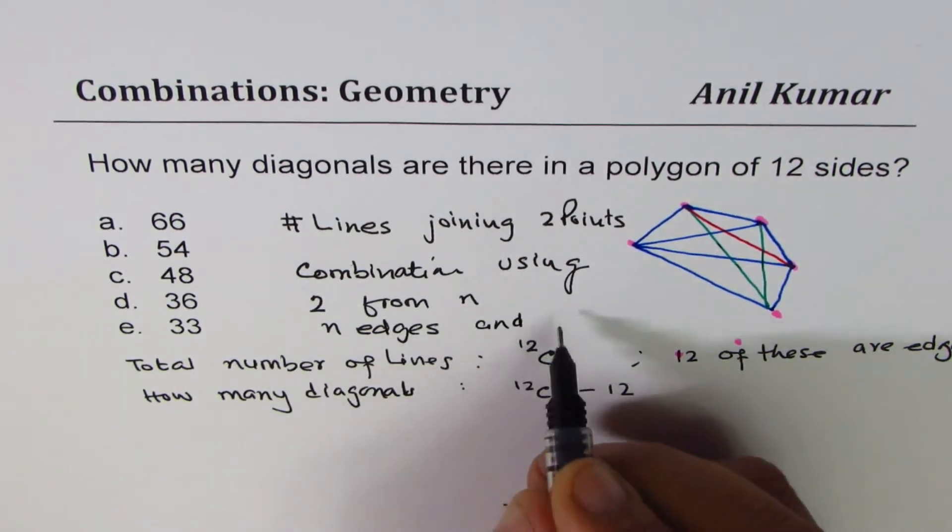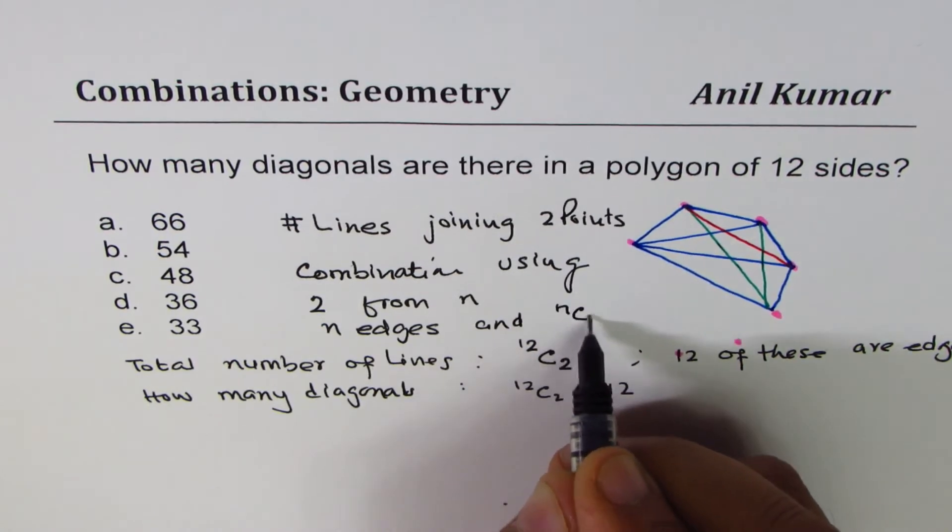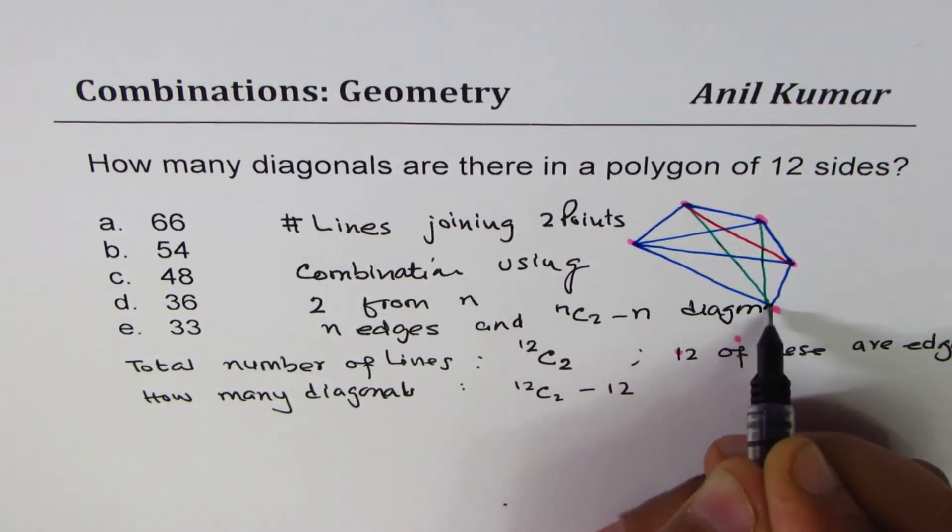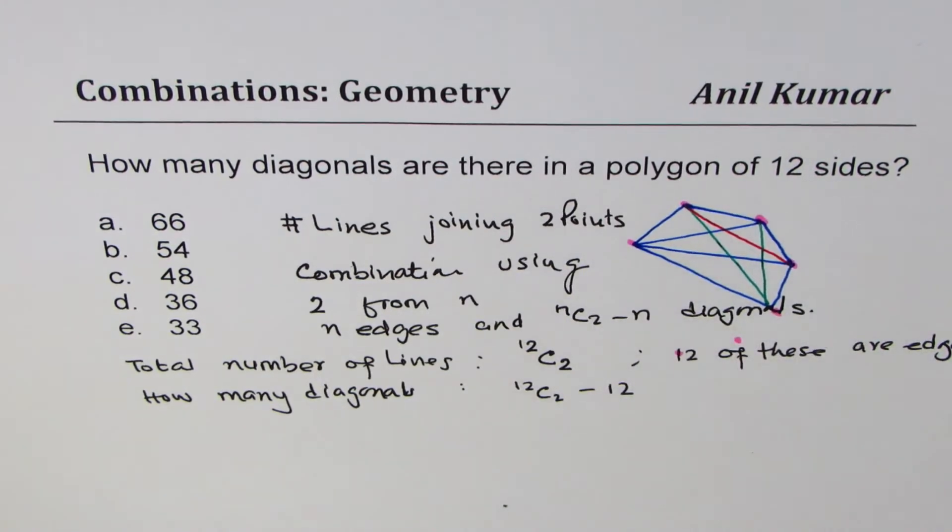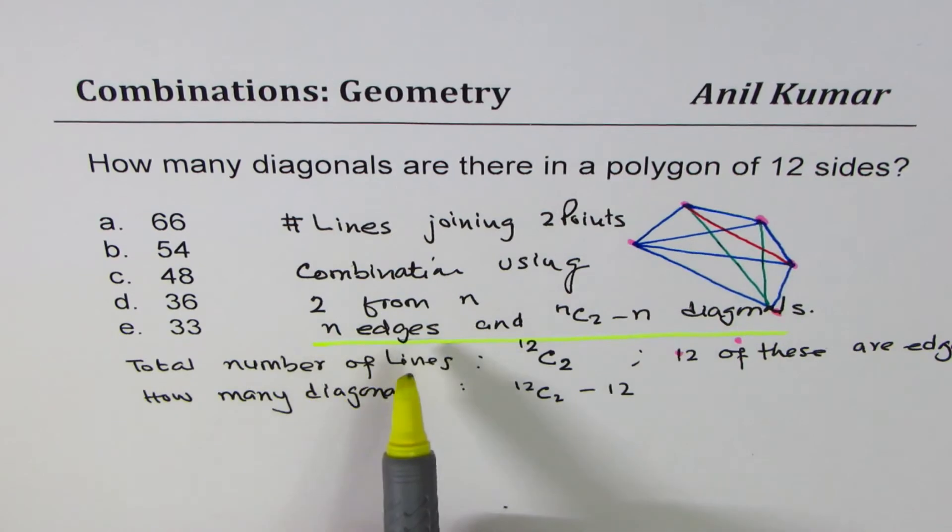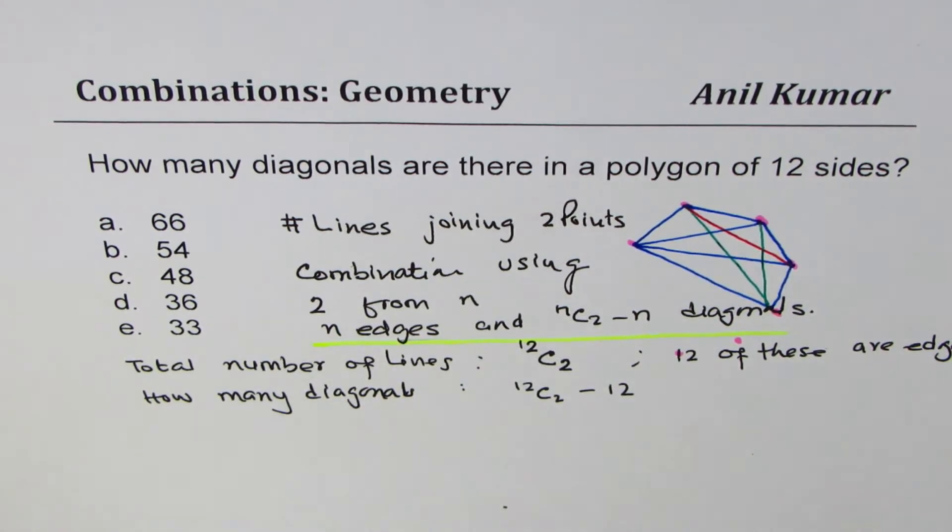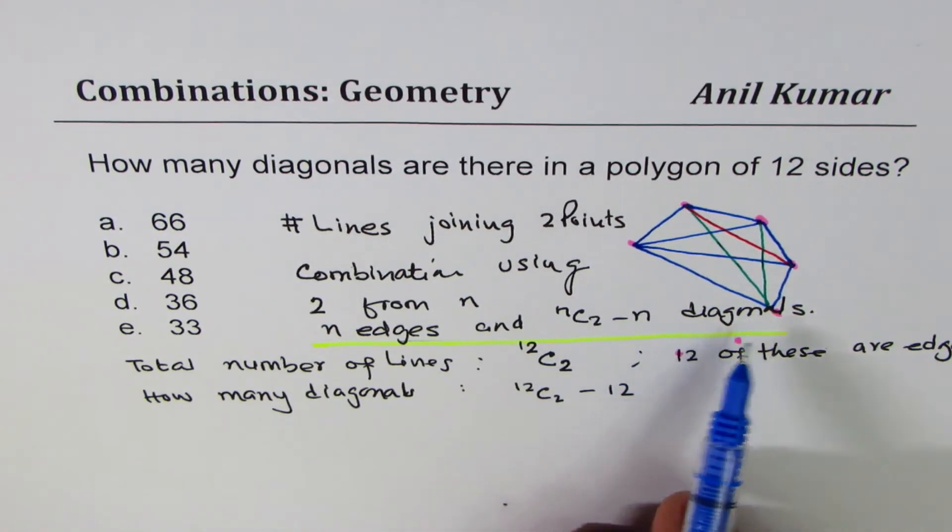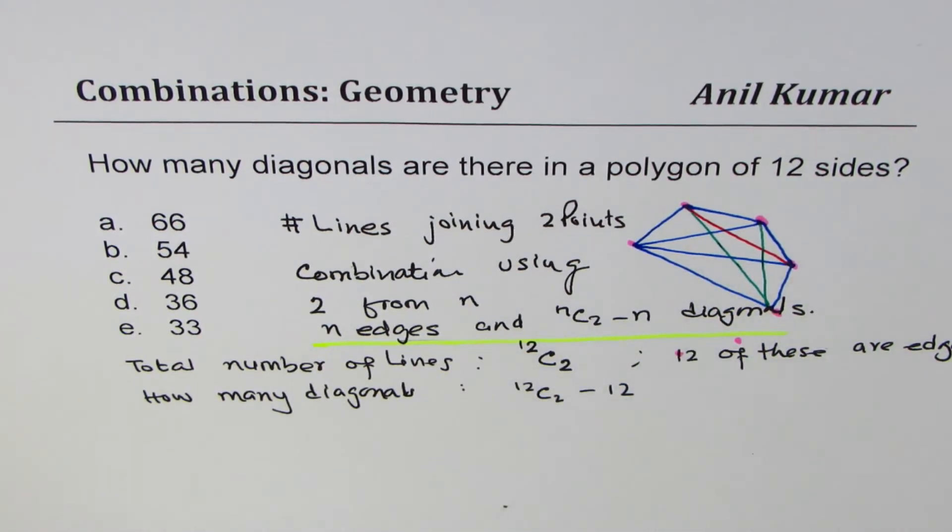And nC2 minus n diagonals. Does it make sense? So that is how we could get our formula. Do you understand? There are n edges for a polygon with n vertices. nC2 is total number of lines, so their difference is the number of diagonals. Is that okay? So that is how we can find the answer.